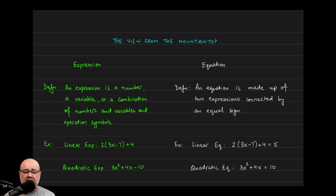An expression, the definition is that it's a number by itself or just a variable, or it's a combination of the numbers and variables and operation symbols. That's the formal technical definition. The simple version is it could be a number, it could be a variable, it could be a number and a variable with addition, subtraction, multiplication, division thrown in.